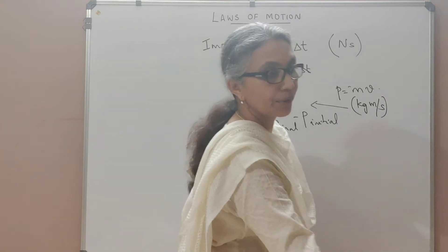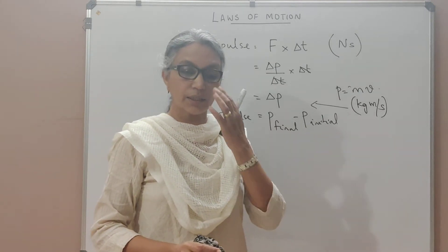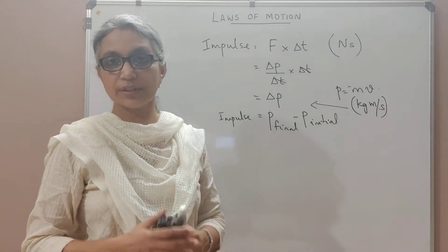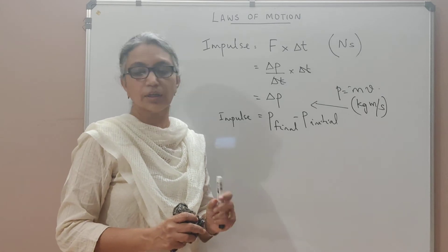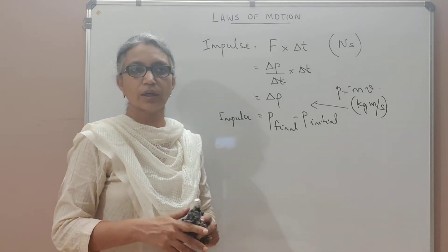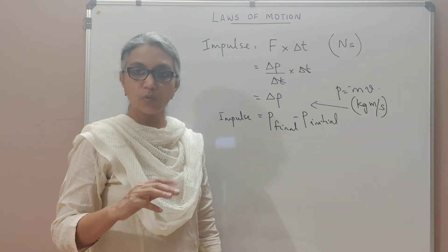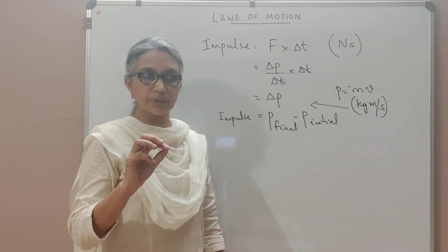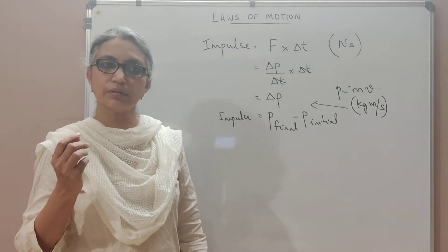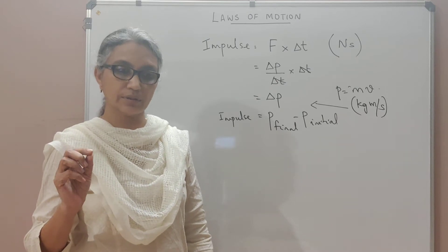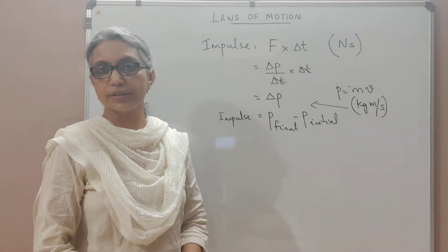We now move to the law of conservation of momentum. It states that the momentum of a system remains constant if the net external force acting on the system is zero. Such a system is called an isolated system — one where the net external force acting on it is zero. So the momentum of an isolated system remains constant.